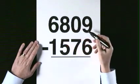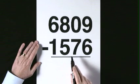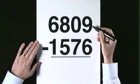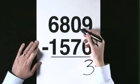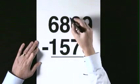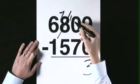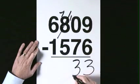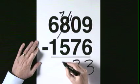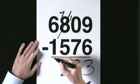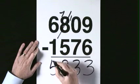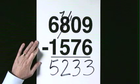6,809 subtract 1,576. 9 takes 6 is 3. 0 takes 7 is not possible, exchange from the 8. 8 becomes 7, 10. 10 takes 7 is 3. 7 take 5 is 2. 6 take 1 is 5. The answer is 5,233.